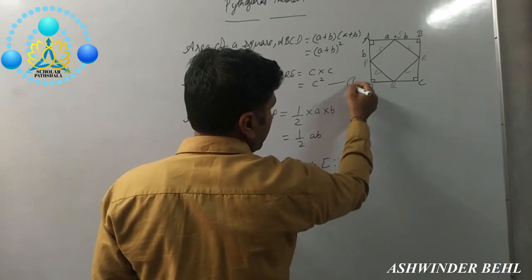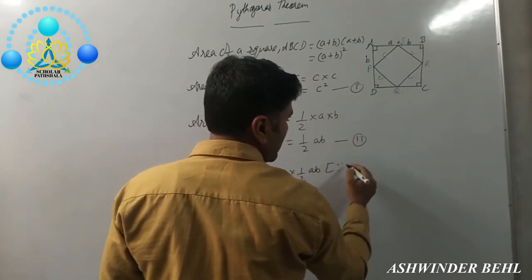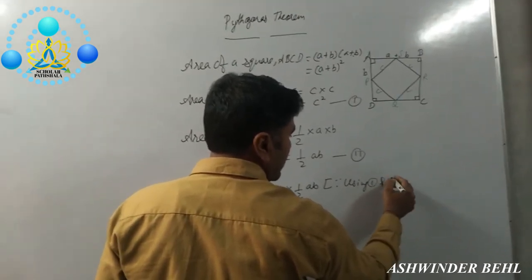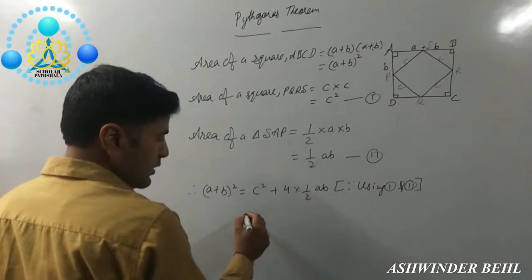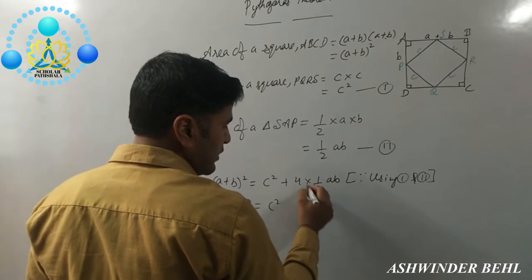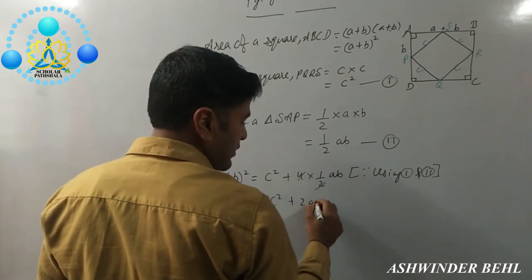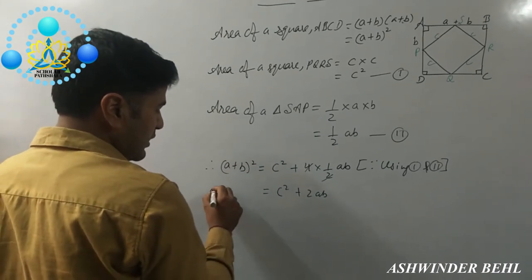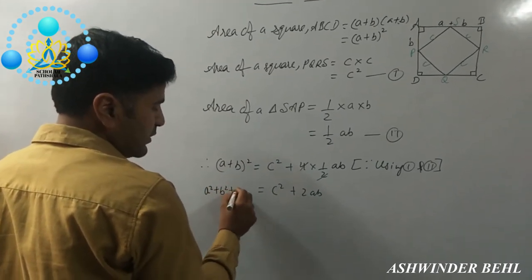You can put here equation 1 and equation 2. Using these, C square plus 2AB. A plus B the whole square is A square plus B square plus 2AB.